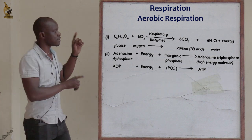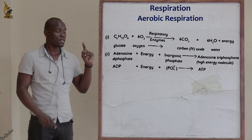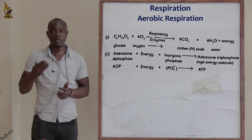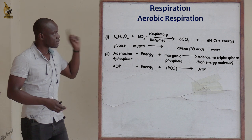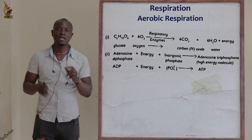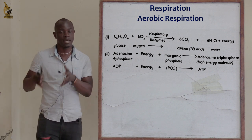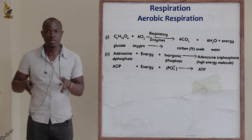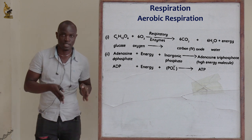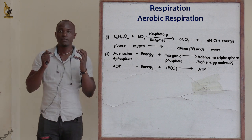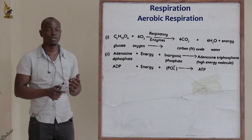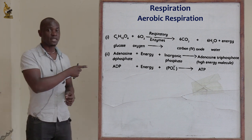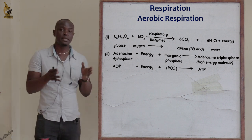As you can look at this summary equation, glucose is completely broken down in the presence of oxygen and respiratory enzymes to give six molecules of carbon dioxide, water molecules, plus energy in the form of ATP. During aerobic respiration, oxygen must be present and glucose will be completely broken down.